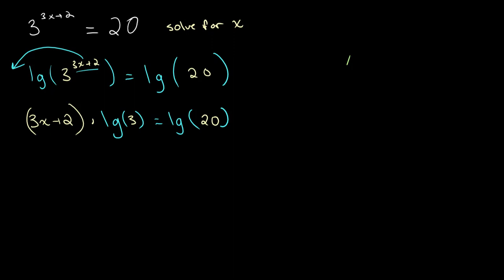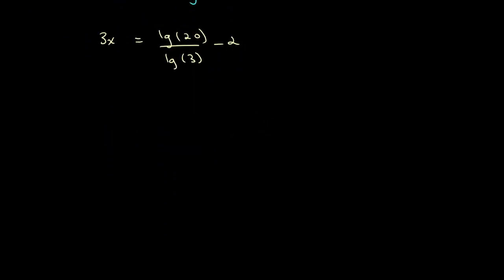Now we want to get x all alone. So we can say lg of 20 divided by lg of 3 is equal to 3x plus 2. We can take 2 away. So let's say 3x is equal to lg of 20 over lg of 3 minus 2 because we're trying to get x alone here. So we can plug this up in our calculator.